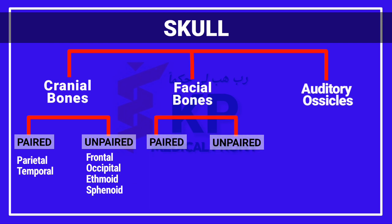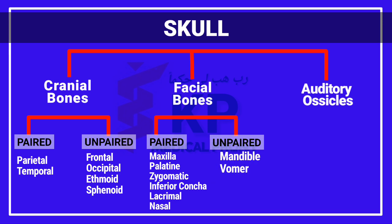The facial division also has two subdivisions: the paired bones and the unpaired bones. The paired bones of the facial division are the maxilla, palatine, inferior concha, zygomatic bone, lacrimal bone, and nasal bone. The unpaired bones of the facial division are the mandible and the vomer bone. The auditory ossicles are the tiny bones present in the human ear — the malleus, the incus, and the stapes. All these bones combine to form the skull of the human body.